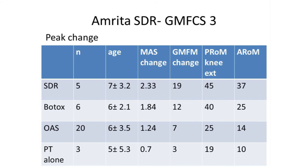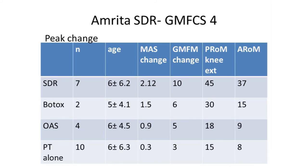The peak change for an SDR patient may come after a year, whereas Botox peaks around the third or fourth month, and oral antispastics depend on finding the right dose without side effects. For GMFCS 4 patients, results are not quite as good as GMFCS 3, but these children are sitting and still show better overall changes compared to Botox, oral antispastics, or PT alone groups. SDR really brings the tone down so these patients can benefit from therapy.